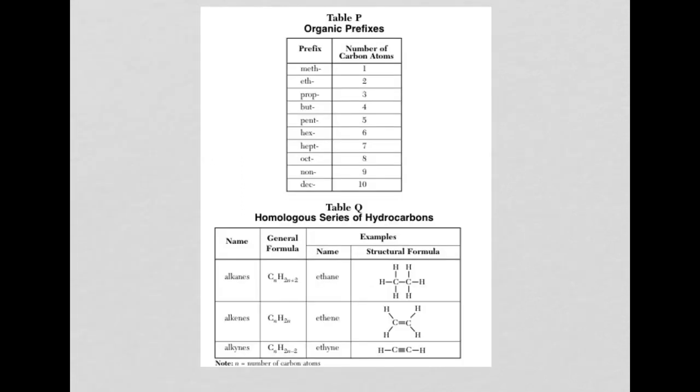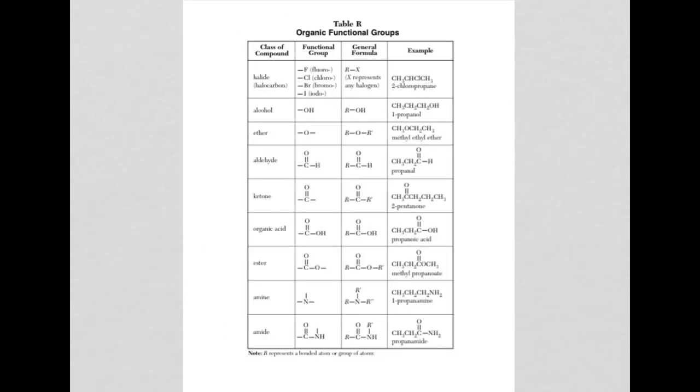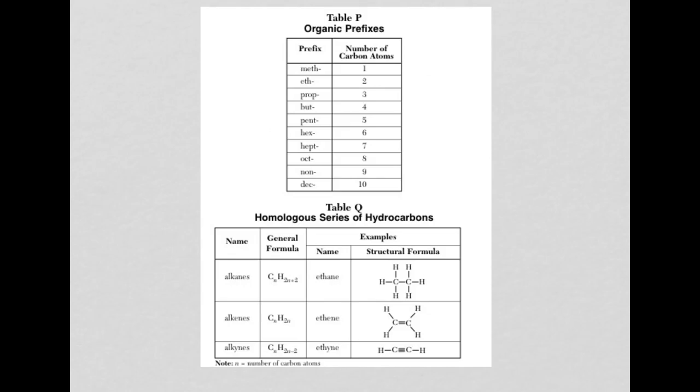Let's check out the organic chemistry questions and then the answers with explanations. I want to point out that for organic chemistry there are three reference tables that are very important: reference table P, reference table Q, and reference table R, which gets an entire page. Let's go back and start with question one.